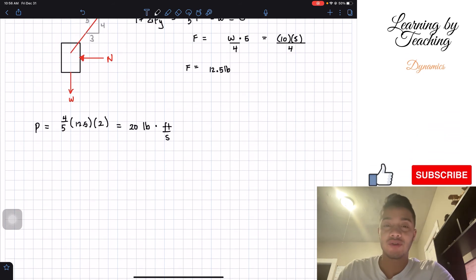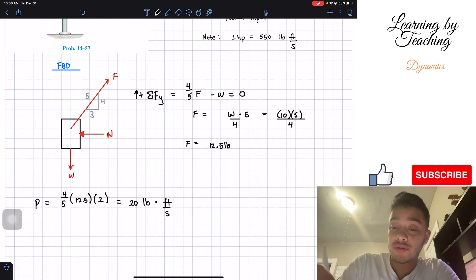All right, so we found our power. However, these are not the usual units that we think of in the English system. The usual units we need is to convert them to horsepower. And we can do that by this conversion factor. So all we need to do is take that 20, divide it by 550. And if we do that, this will give me a total of 0.03636 and so on horsepower.